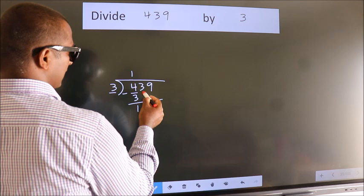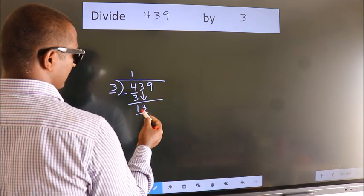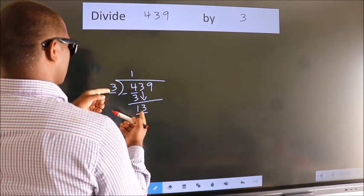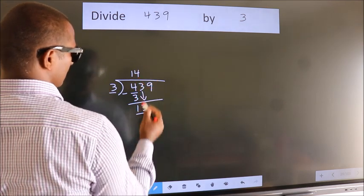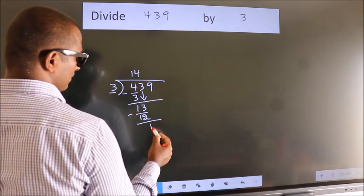After this, bring down the beside number. So, 3 down. So, 13. A number close to 13 in 3 table is 3 fours 12. Now we subtract. We get 1.